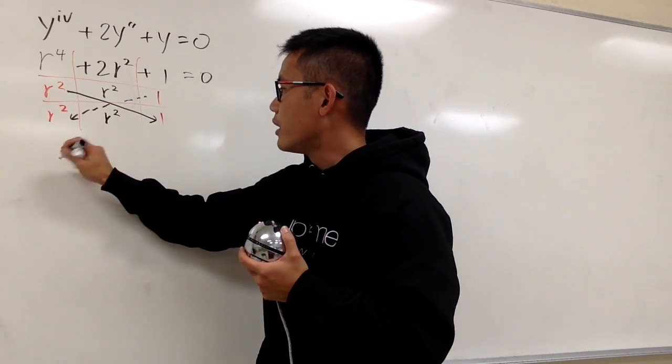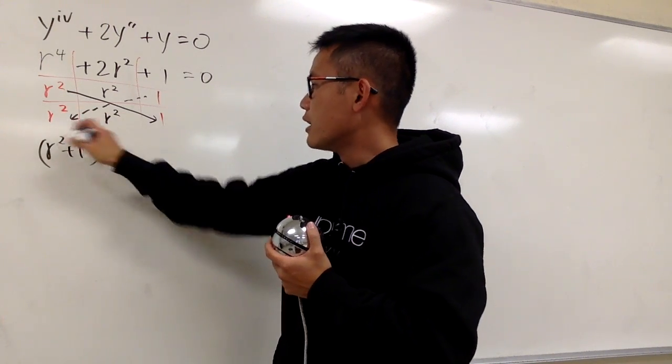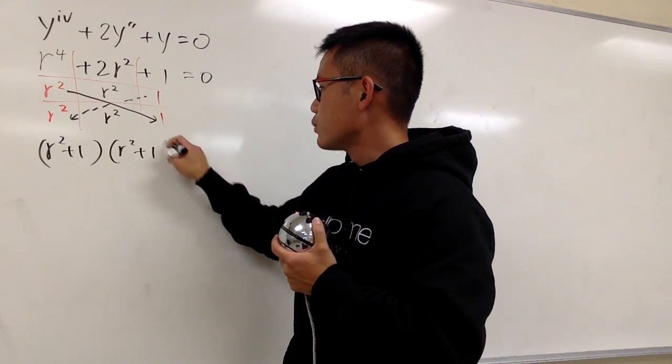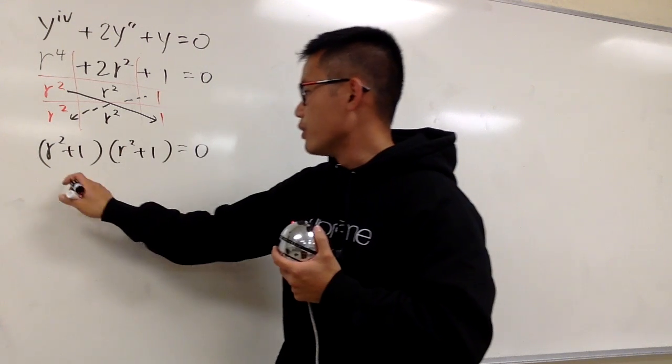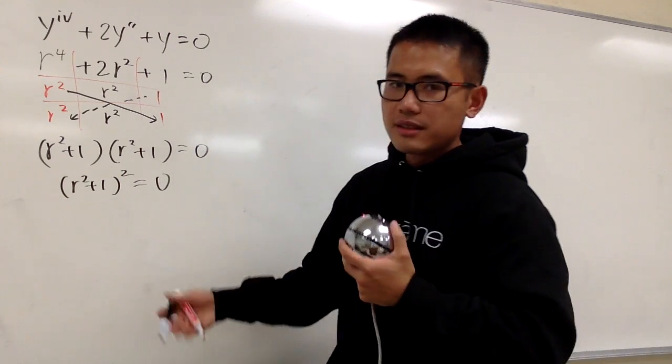And the factor is going to be r squared plus 1, and then multiply by r squared plus 1. In another word, you know this is r squared plus 1 squared. Something like this.